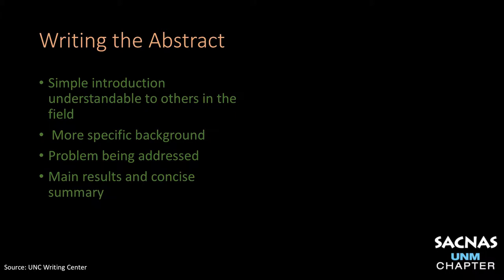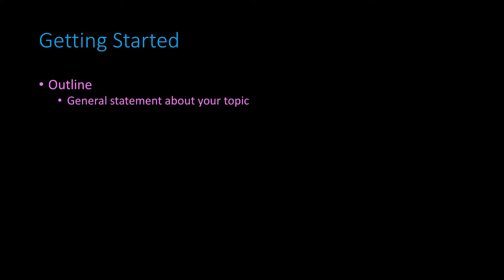Now that we know the components and how to write an abstract, let's go through an example. We recommend using an outline — use any method that works for you, but an outline is pretty easy. The first thing in your outline is a very general statement about your topic. This is the very first sentence of your abstract; it introduces your topic and problem using a general statement that any scientist can understand and that catches the reader's attention, making them want to keep reading.